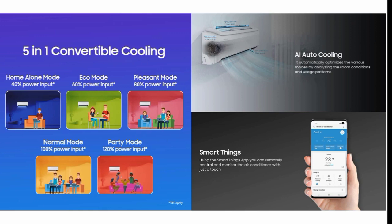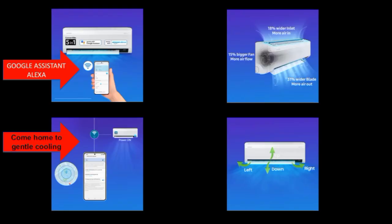You can use AI mode with the SmartThings application on your mobile phone. Through the SmartThings app, you can set the AC to start cooling 10 minutes before you arrive home. Before you reach your room, the AC will already have started cooling. That is the pre-cool or gentle cooling feature.